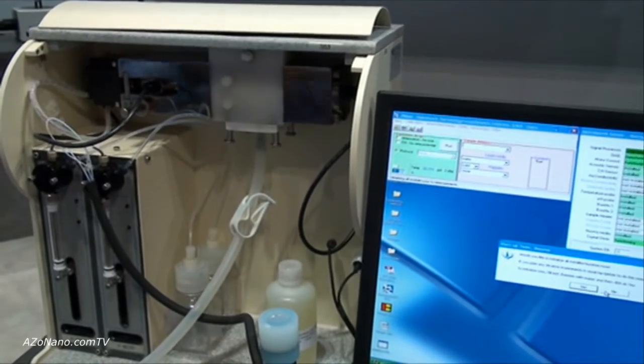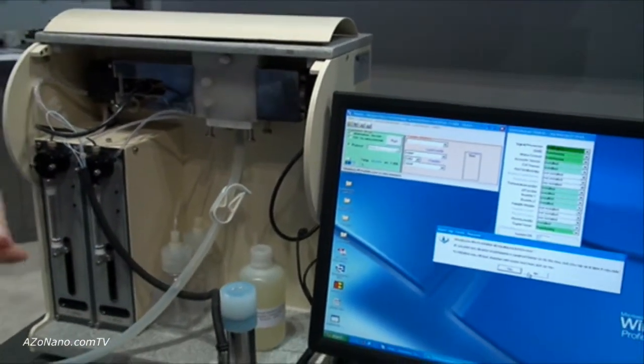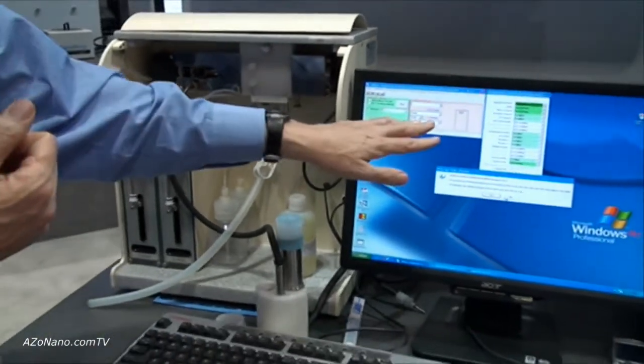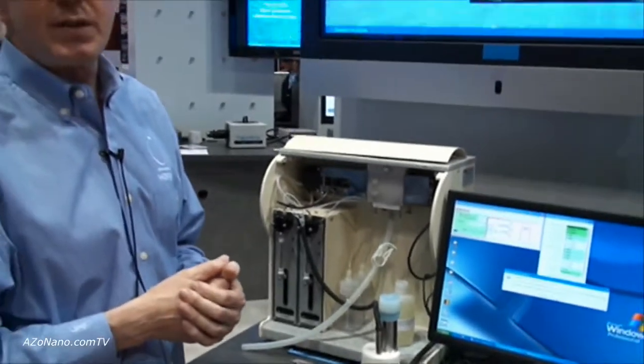The only thing we need to know here is what's the density of the material. We also need to know what's the volume concentration. We input that information into the system. It goes out and performs the measurement and we will develop the particle size distribution of the concentrated sample without any dilution.